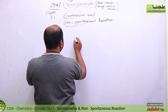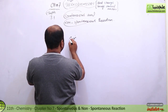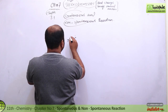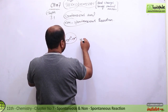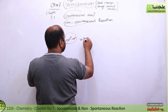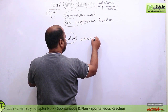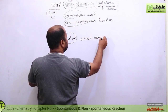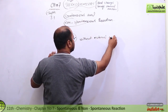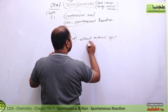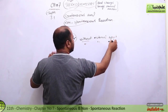Spontaneous woh hota hai jo khud ba khud ho raha hai — yani without external agent, without external aid. Jo khud ho raha hai, that is spontaneous.